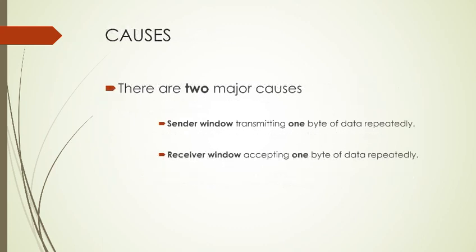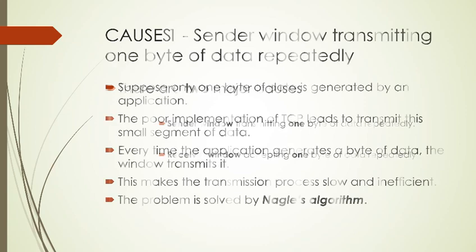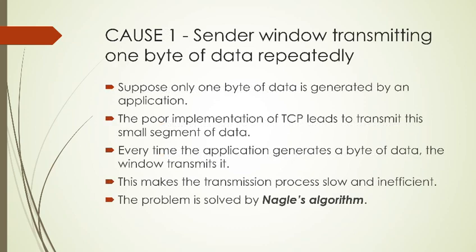There are two major causes. Cause 1: the sender window transmitting one byte of data repeatedly. Cause 2: the receiver window accepting one byte of data repeatedly. For Cause 1, consider if only one byte of data is generated by an application. With a poor TCP implementation, this smaller segment of data will be transmitted every time, making the transmission process slow and inefficient.